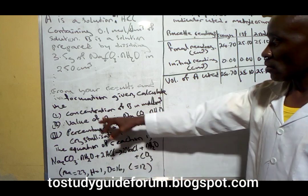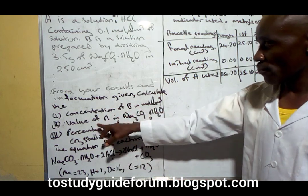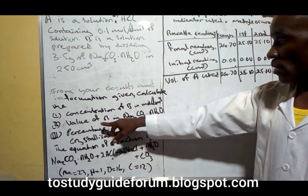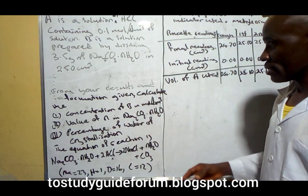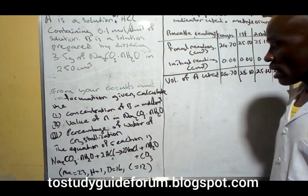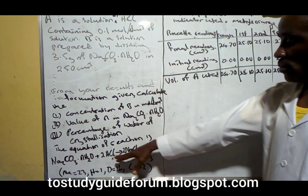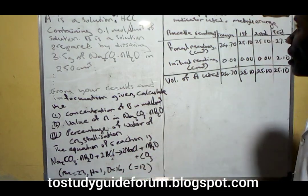From the information given, calculate the concentration of B in mole per dm³, the value of n in the trioxocarbonate hydrate, and the percentage water of crystallization.